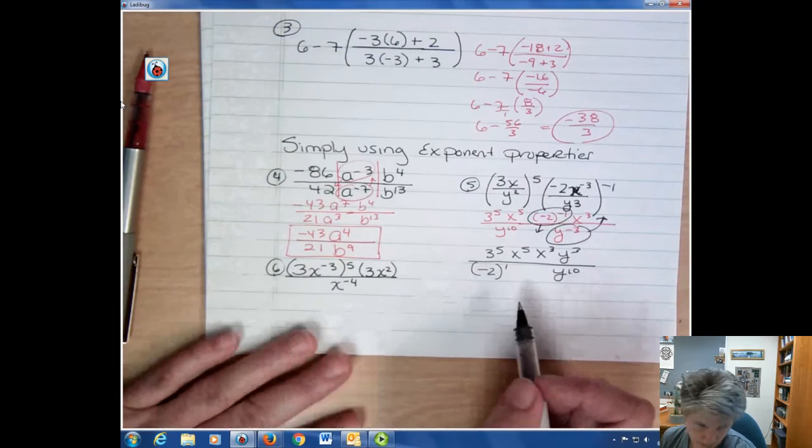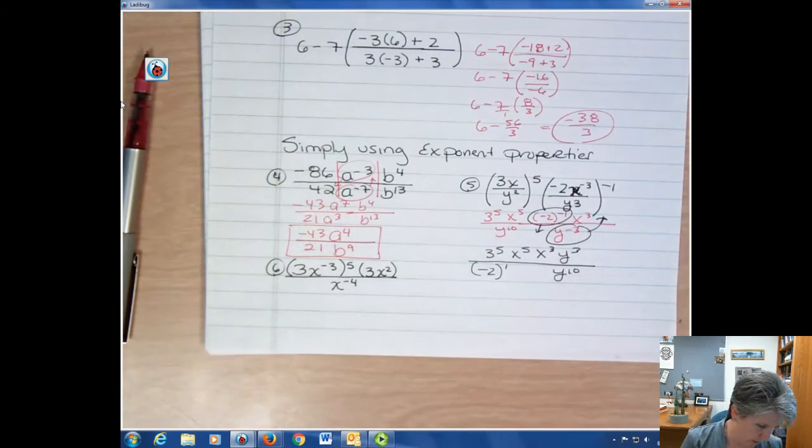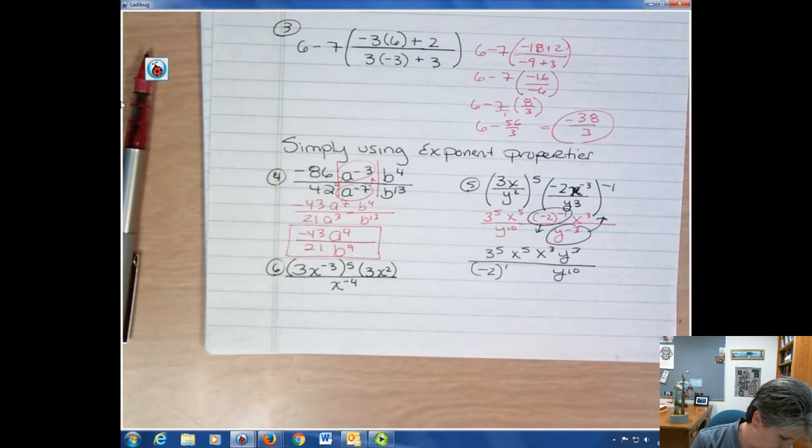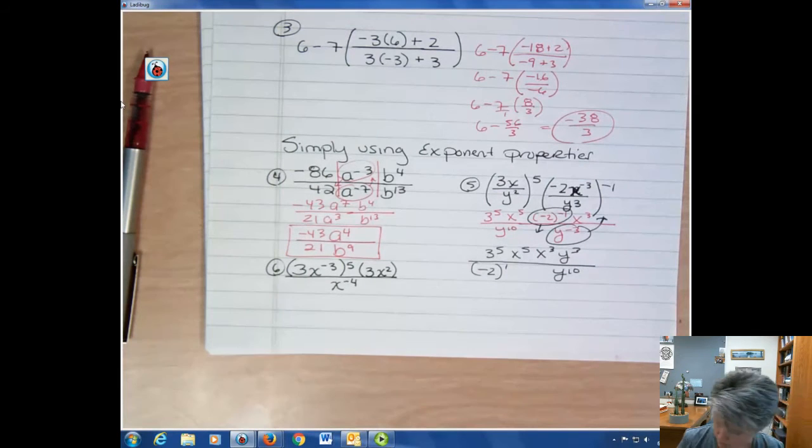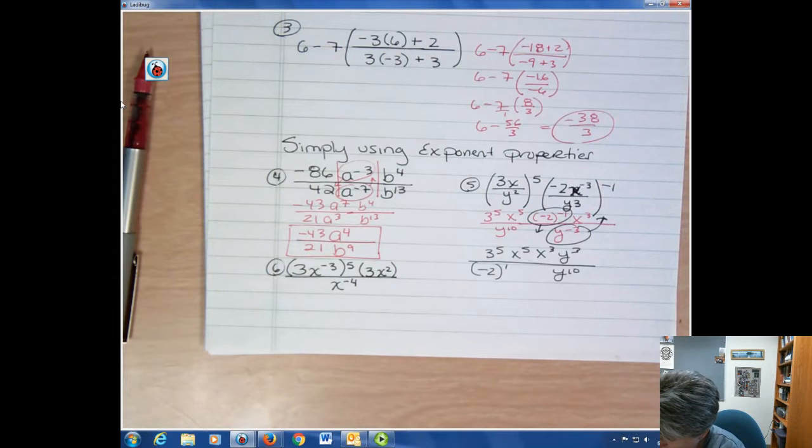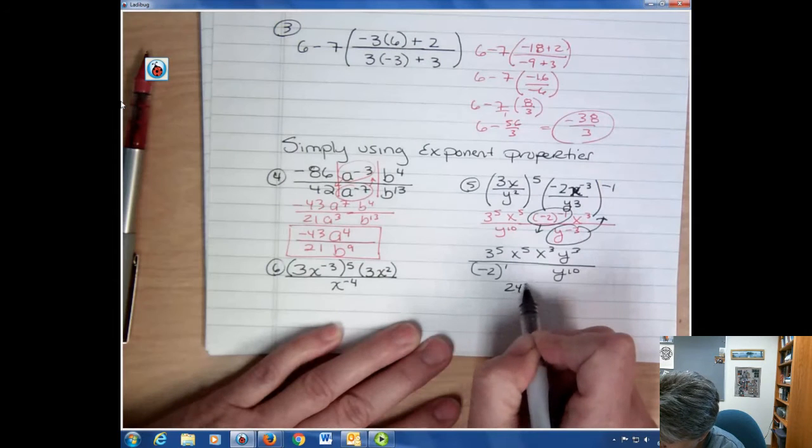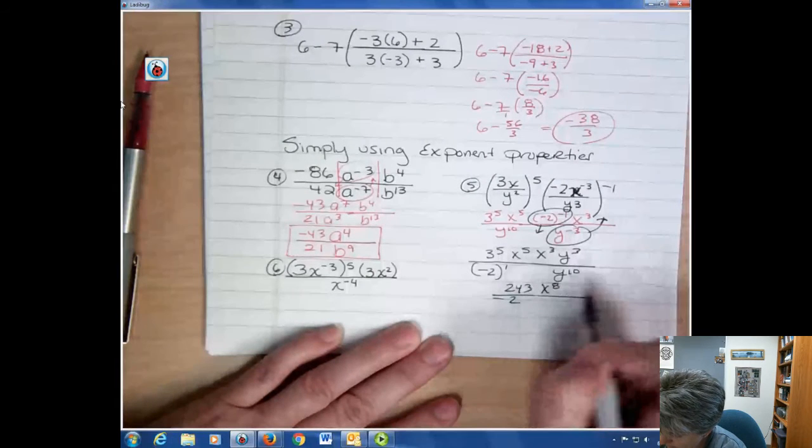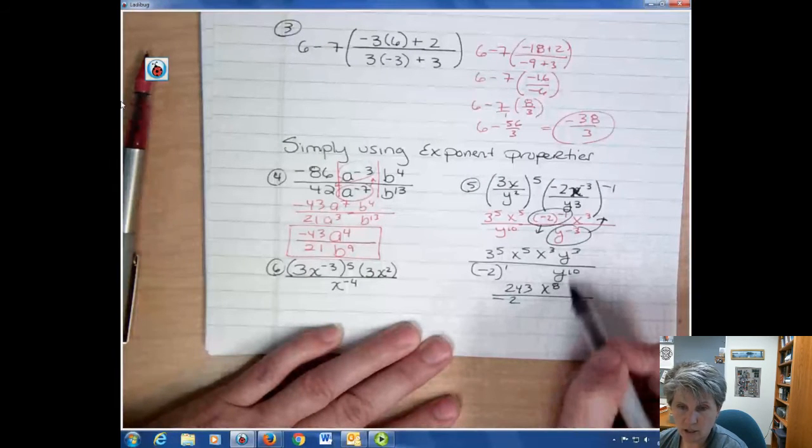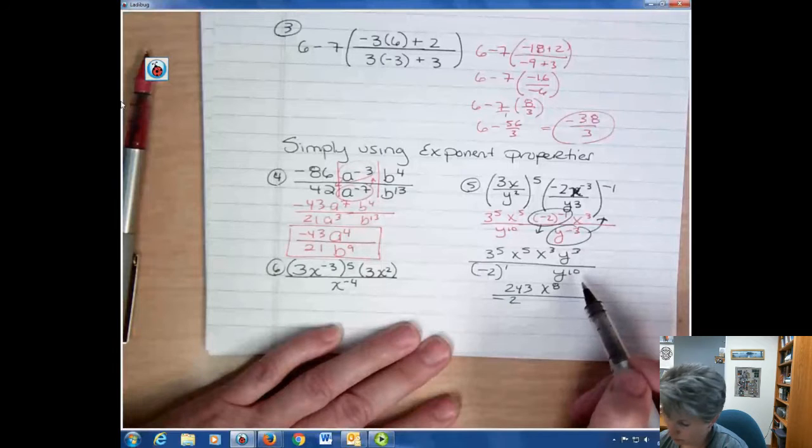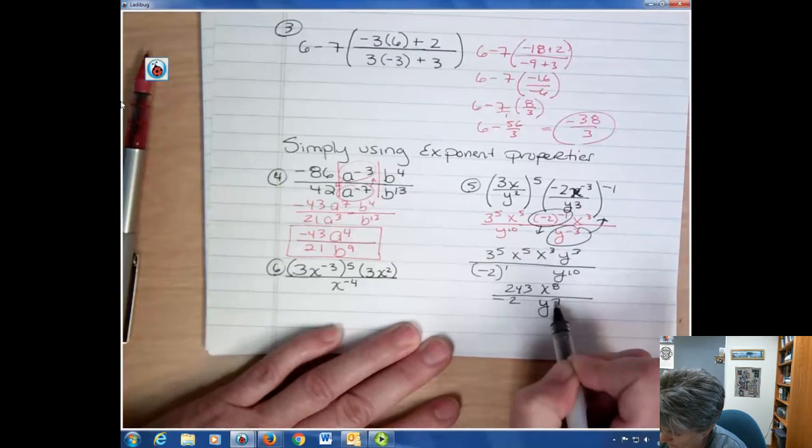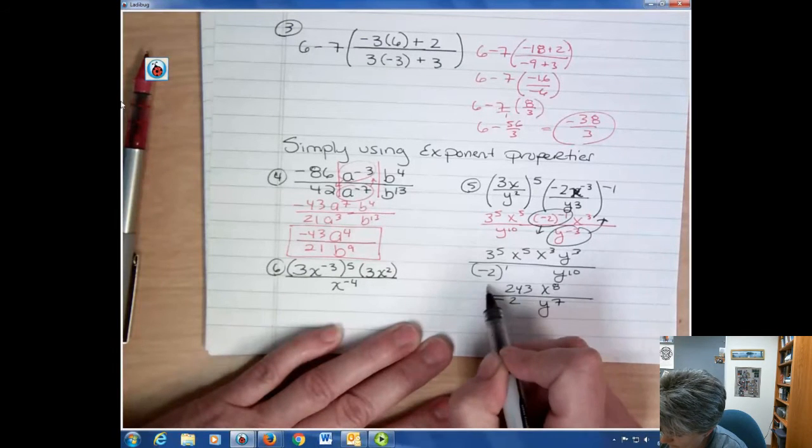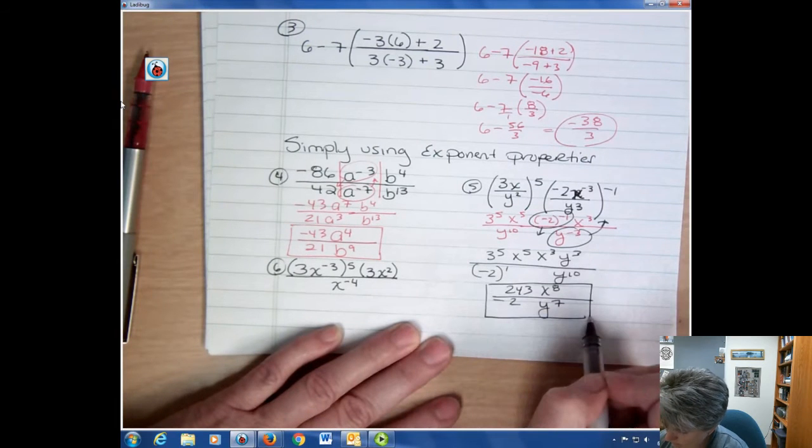And now I'm just going to clean this up. 3 to the fifth power, I can write that. If it was paper, I wouldn't care, but I think the computer would like you to do that. So that's going to be 243 over negative 2. x to the 5 plus 3 is x to the eighth. And where do you have more y's? You have more y's on the denominator. Subtract and you get y equals 7. Those are in the denominator because that's where I have more.